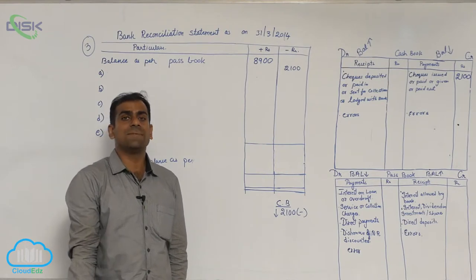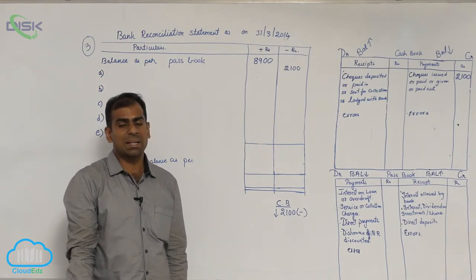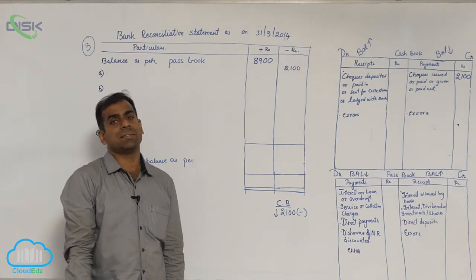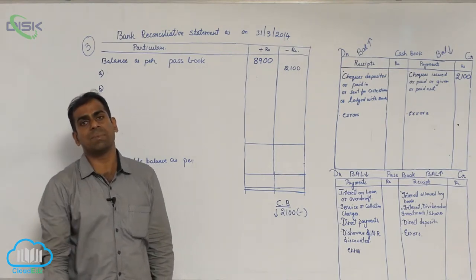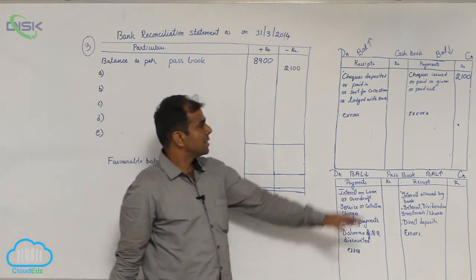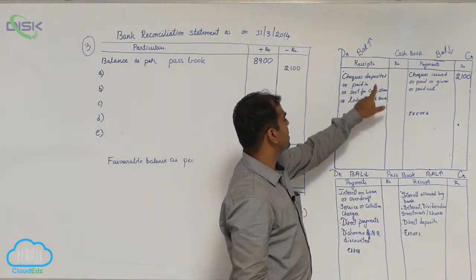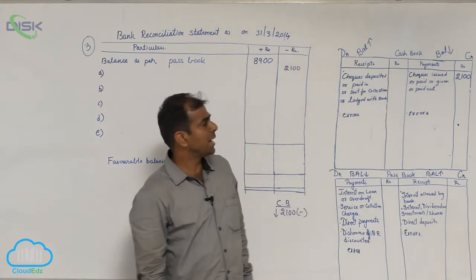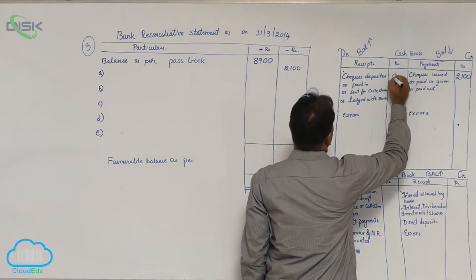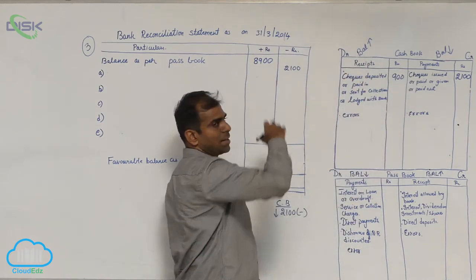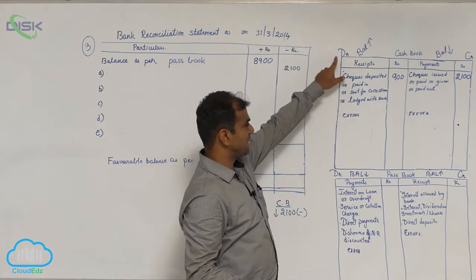Now moving on to the debit. Check deposited for collection. Check deposited for collection but not yet realized. Deposited by whom? By businessman or you. So it is a cashbook entry. Check deposited for collection. How much is the amount? 900. So we have to enter 900 in the cashbook on which side? Debit side.